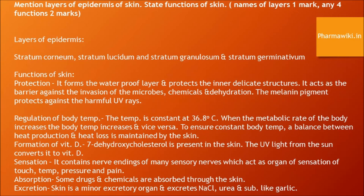Skin also regulates body temperature. The temperature is constant at 36.8 degrees Celsius. When the metabolic rate increases, body temperature increases and vice versa. To ensure constant body temperature, a balance between heat production and heat loss is maintained by the skin. Formation of vitamin D: 7-dehydrocholesterol is present in the skin and UV light from the sun converts it to vitamin D. Sensation: the skin contains nerve endings of many sensory nerves which act as organs of sensation of temperature, pressure, and pain.